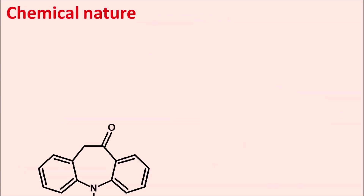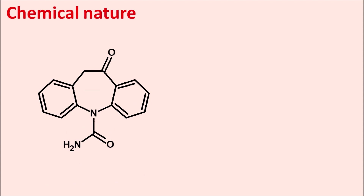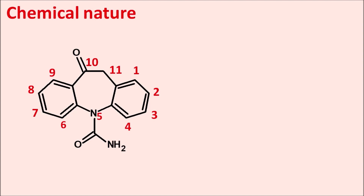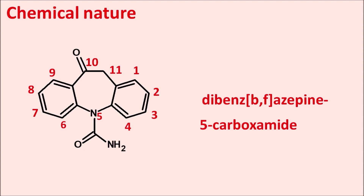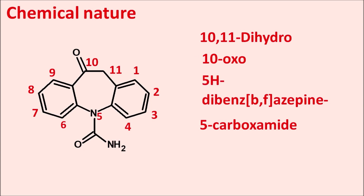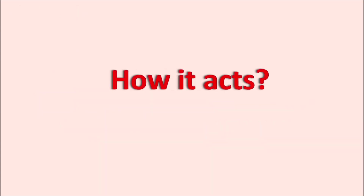Regarding the chemical nature of oxcarbazepine: it has a seven-membered ring system with one nitrogen — the azepine — flanked by two benzene rings, represented as dibenz[b,f]azepine. This dibenzazepine ring has a carboxamide group at the 5th position, the 10th and 11th positions are saturated (10,11-dihydro), a keto group is present at the 10th position (10-oxo), and there is an extra hydrogen at the 5th position (5H).